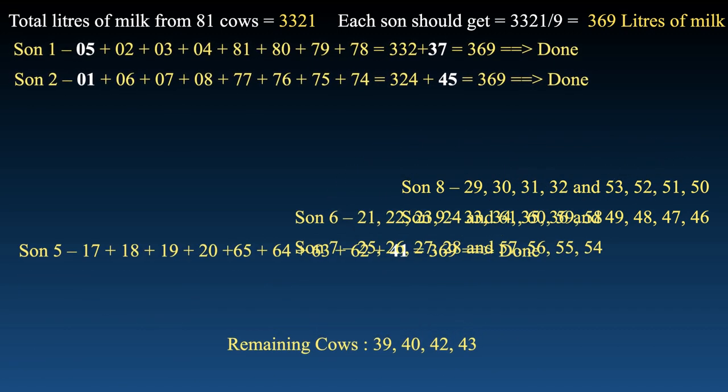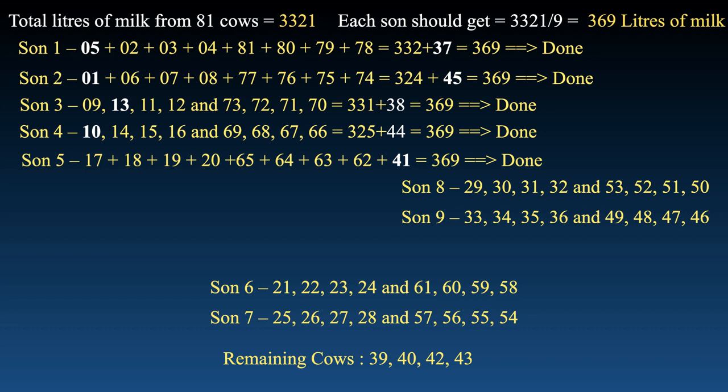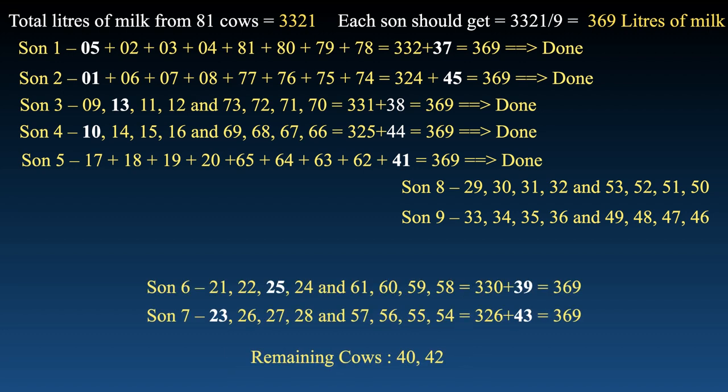For sons 6 and 7, using ±2: give cow 39 to son 6 — he is now two short. Swap a cow with son 7 with a difference of two. Son 6 gains two and equals 369. Son 7 now needs to make up the 41 he needed plus the two he lost to son 6. The only option is cow 43. This pair is also sorted.